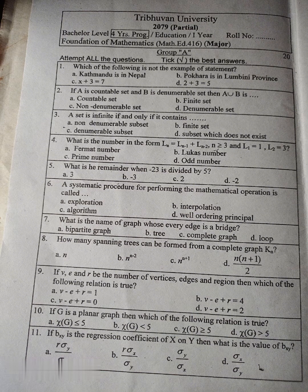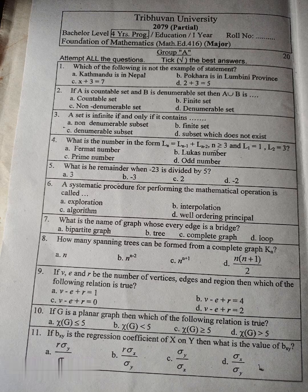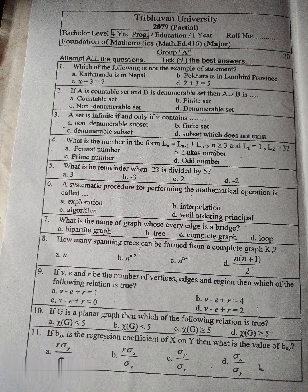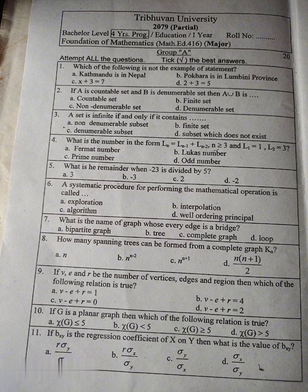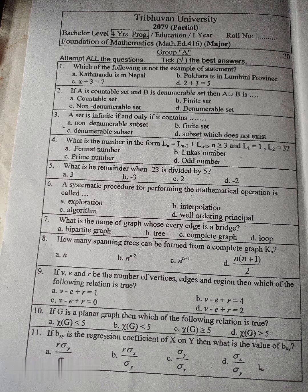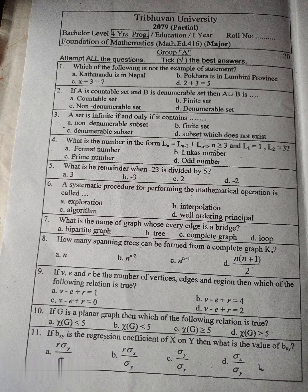Question number 9: If V, E, and R be the number of vertices, edges, and region, then which of the following relation is true? A. V minus E plus R equal to 1, B. V minus E plus R equal to 4, C. V minus E plus R equal to 0, D. V minus E plus R equal to 2.